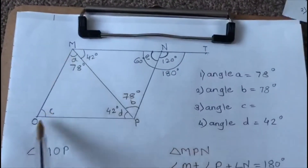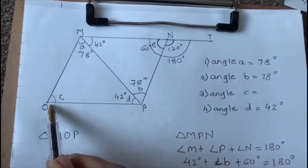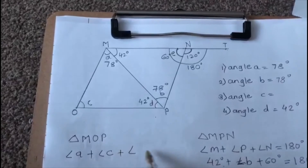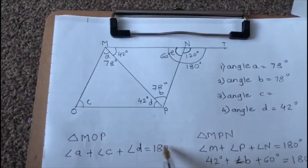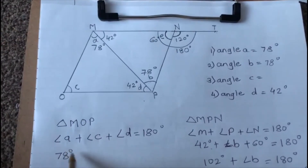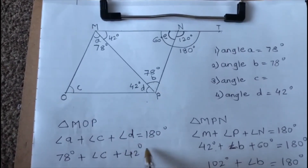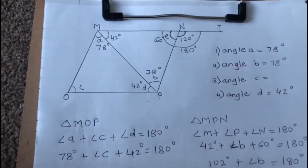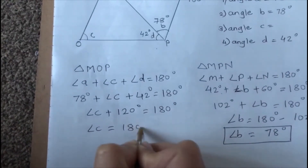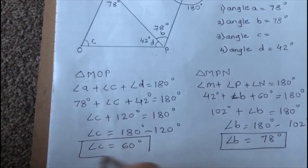Now in triangle MOP we have two angles: angle A and angle D, so it's easy to find angle C. Angle A plus angle C plus angle D equals 180 degrees. Angle A is 78 degrees plus angle C plus angle D which is 42 degrees equals 180 degrees. So angle C plus 120 degrees equals 180 degrees, meaning angle C equals 180 minus 120, which comes to 60 degrees.